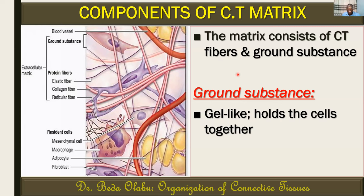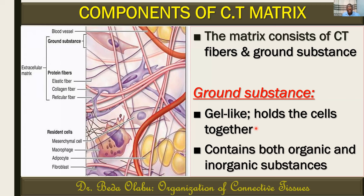The ground substance is a gel-like material that holds the cells together. This gel-like material contains both organic as well as inorganic components. In a histological image, the zone that is not part of the cells and not part of the fiber system would be considered to be the ground substance — the material between cells.